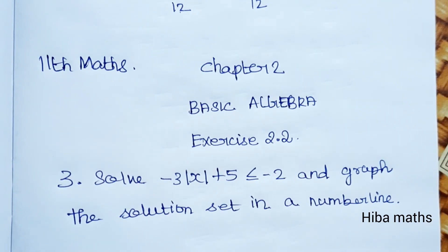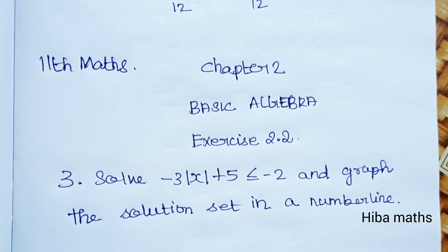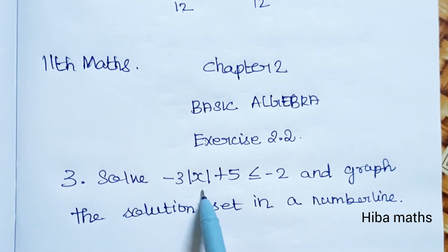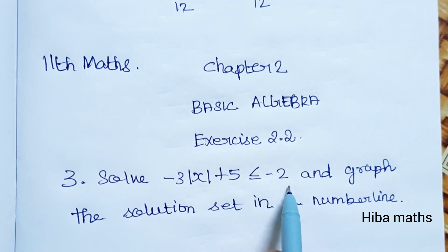Hello students, welcome to Hiba Maths. 11th standard maths, Chapter 2: Basic Algebra, Exercise 2.2. Let's look at the third question: solve -3|x| + 5 ≤ -2 and graph the solution set in a number line.